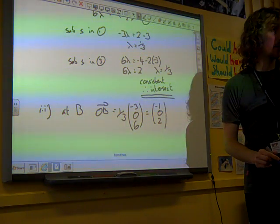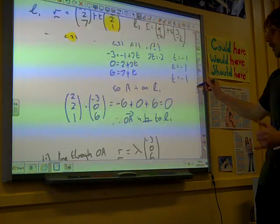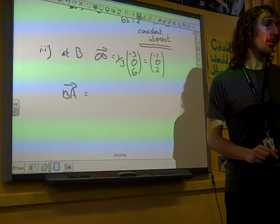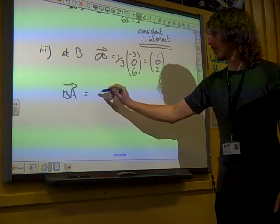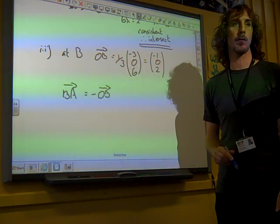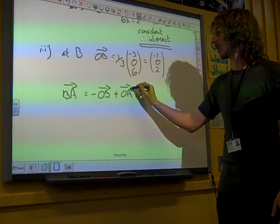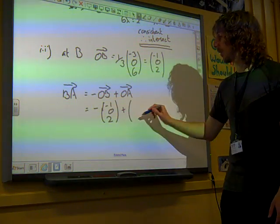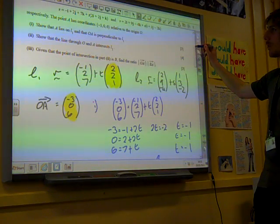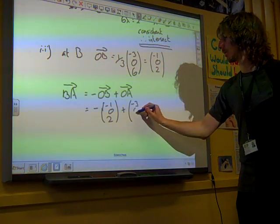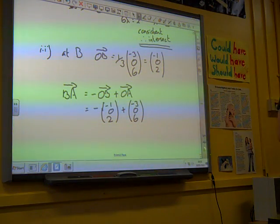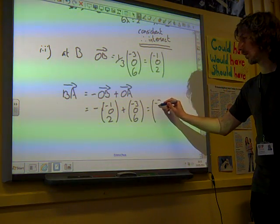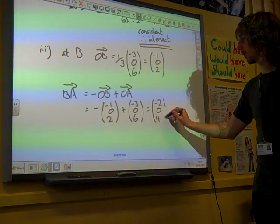Okay, I need to find the vector BA, because that's the one I'm being asked for in the question. So BA, from B to A, that's going from B to the origin, so that's minus OB, and then going from the origin to A. So that's minus minus 1, 0, 2, plus minus 3, 0, 6. So the vector from B to A is minus 2, 0, 4.